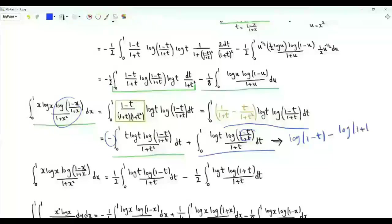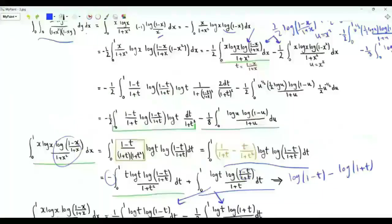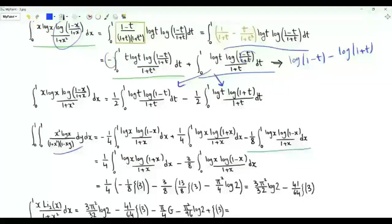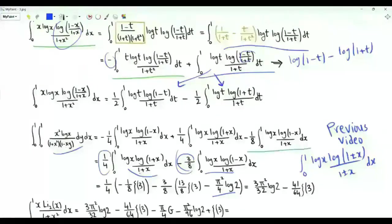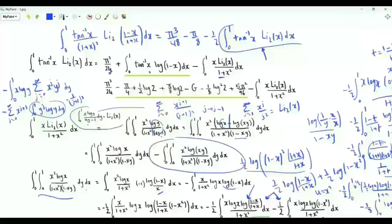Writing the logarithm as log(1 minus t) minus log(1 plus t) and splitting, we combine results to find this integral equals one-fourth times the integral from 0 to 1 of log x log(1 plus x) over (1 plus x), minus three-eighths times the integral from 0 to 1 of log x log(1 minus x) over (1 plus x). We already know these four integrals: the integral involving log x log(1 plus x) over (1 plus x) is minus zeta(3) over 8, and the other is 13 zeta(3) over 8 minus pi² log 2 over 4. Multiplying by the respective factors, the value of this double integral is 3pi² log 2 over 32 minus 41 zeta(3) over 64.